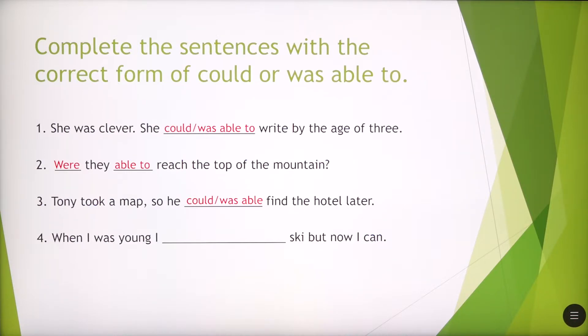And the last one we have, when I was young I, you've got to use could or was able to ski but now I can. What do you think? Could you use just one of these expressions or do you have to use them both? Yes, you can use them both. When I was young I couldn't ski but now I can, or I wasn't able to ski but now I can.